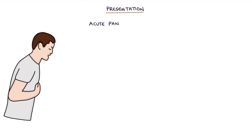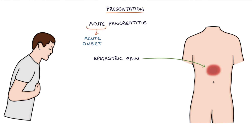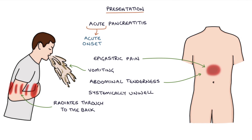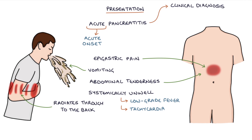Let's talk about the presentation. Acute pancreatitis typically presents with an acute onset of severe epigastric pain. Acute pancreatitis is a clinical diagnosis based mainly on the presenting features and the amylase level.